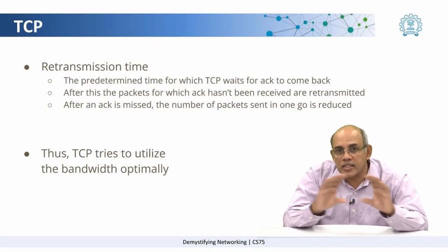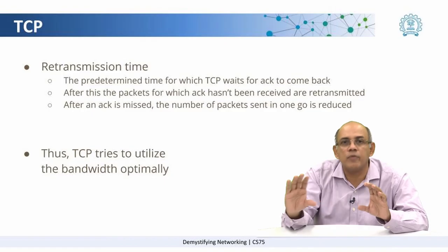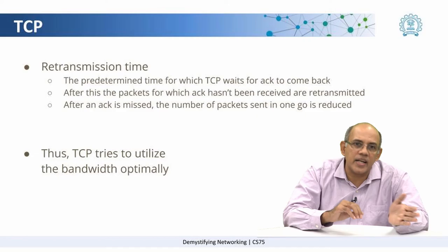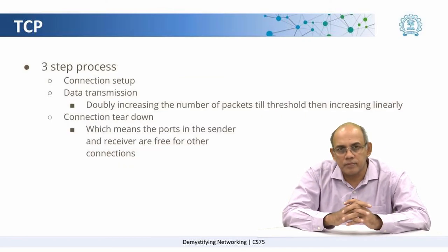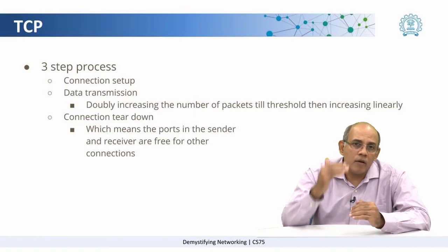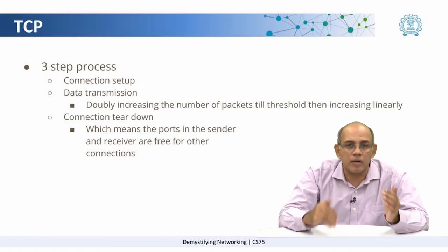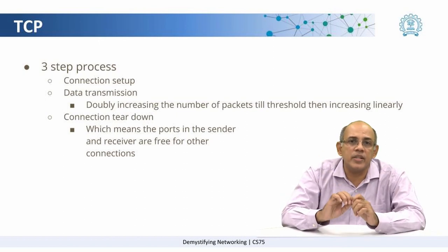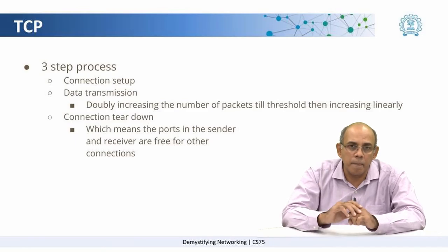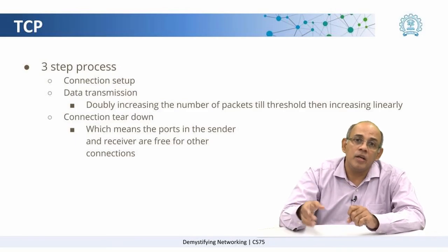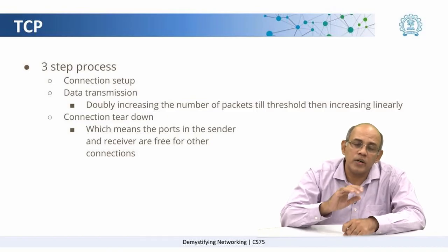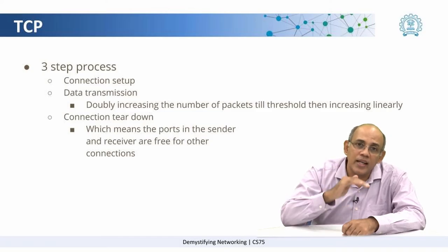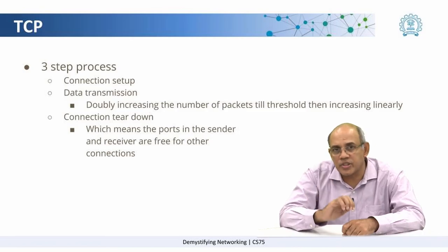In this manner, what TCP tries to do is utilize the network bandwidth optimally in sending packets from the sender to the receiver. To summarize, there are three steps in the entire process. First is the connection setup, where a connection is established between the sender and the receiver. Then there is the data transmission, where the number of packets is increased by doubling up to a certain threshold and then increasing linearly until the entire transmission is complete.